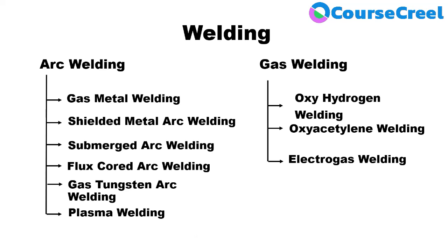Further welding processes defined on the basis of joints are considered as resistance welding, classified as spot welding, seam welding, projection welding, flash welding, butt welding, etc. Thermite welding is also used for joining purposes, and allied processes include brazing and soldering. Many welding processes are used by manufacturers to perform welding over a workpiece to form a complete product.